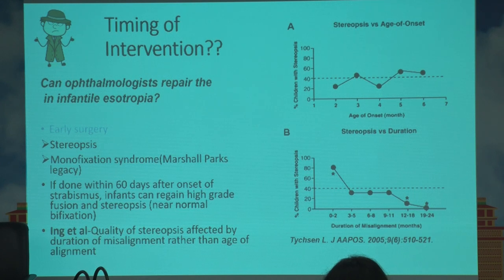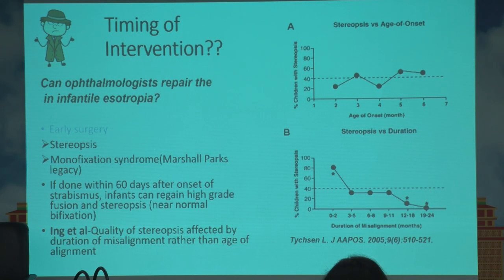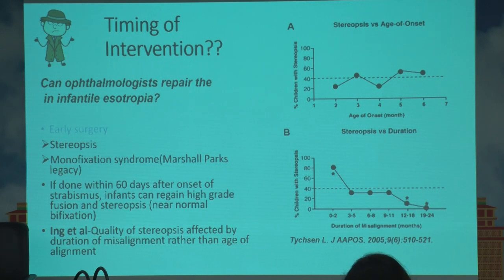Even if you are able to bring the patient to the category of monofixation syndrome — that is, within 8 to 10 prism diopters of residual esotropia — transferring a patient from a large-angle esotropia to a small monofixation syndrome is what is the mark of Marshall Parks' legacy. That would allow the child to develop some amount of binocularity. What is more important is not operating very early, but operating within two months of the onset of esotropia.